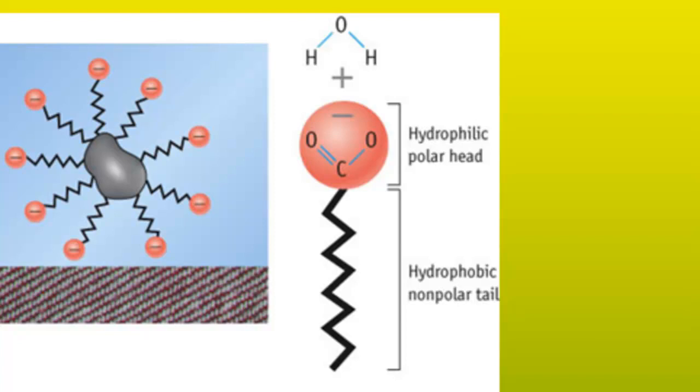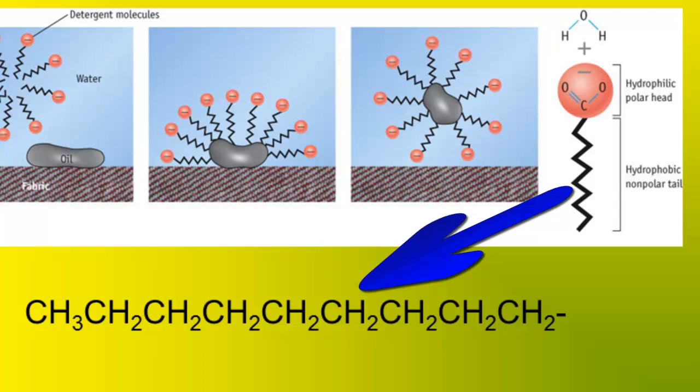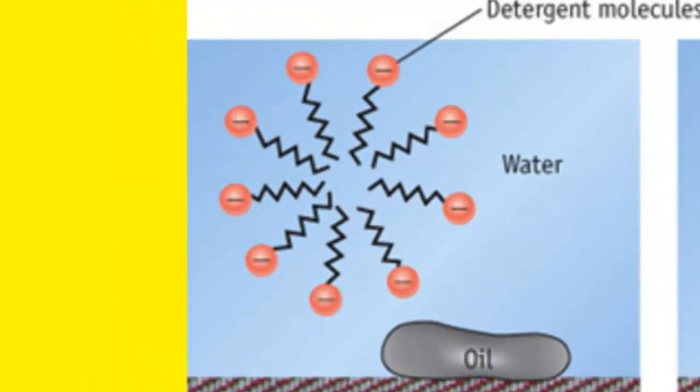Now we can see the structure of the ion, and the structure of the nonpolar tail is a hydrocarbon, which is carbon singly bonded to one another and singly bonded to hydrogens to form this chain, which is very nonpolar. Soap molecules are thought to aggregate in small micelles, shown here.